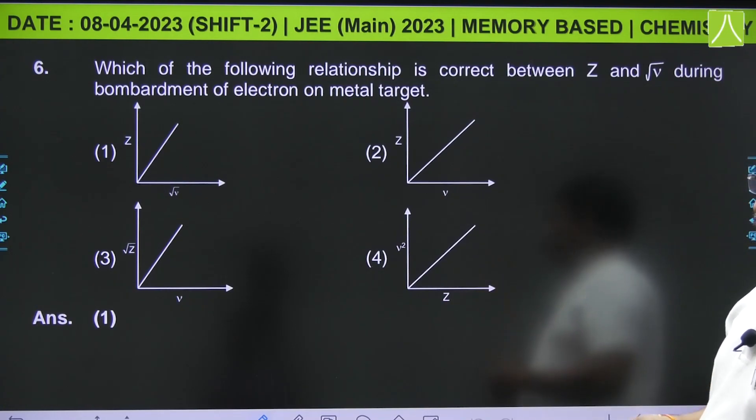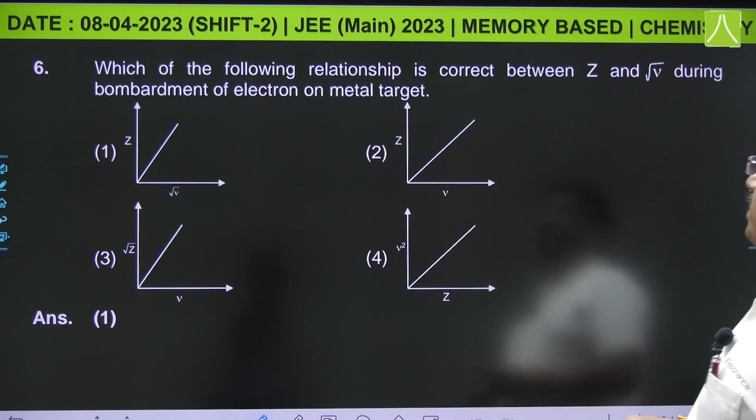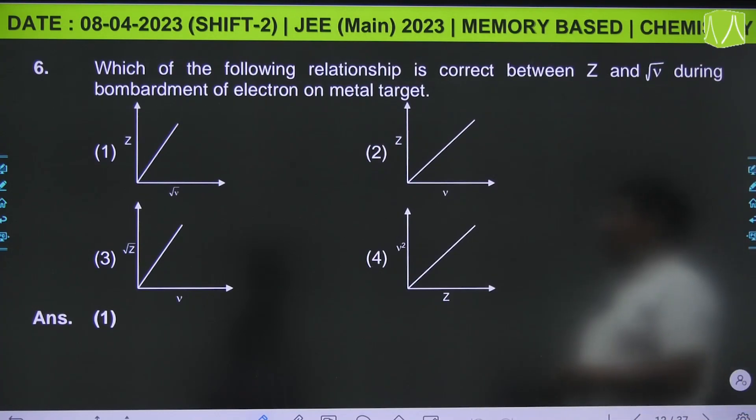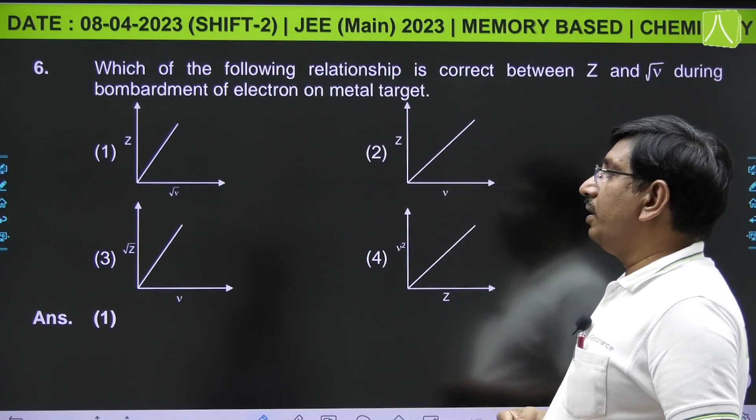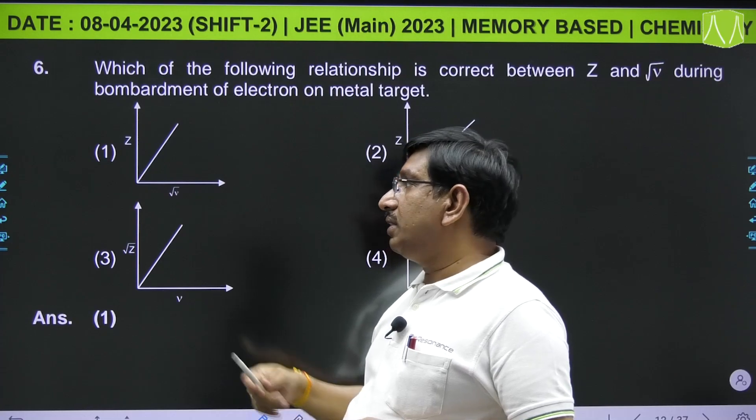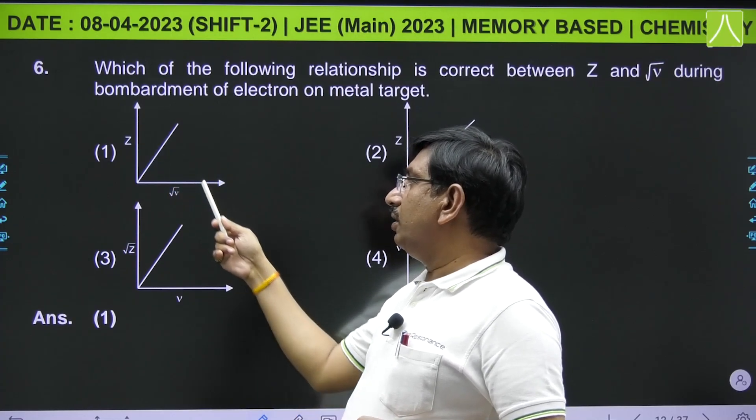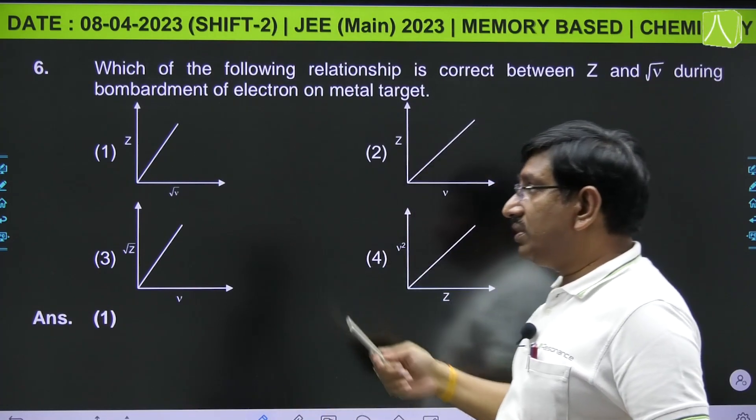Next, from periodic table: which of the following relationship is correct between Z and root over nu during bombardment of electron on metal target? During bombardment of electron on metal target, the frequencies and atomic numbers are directly proportional, so Z is directly proportional to root over nu. This is Moseley's equation.